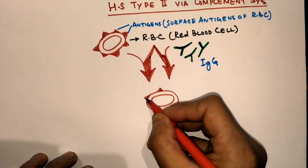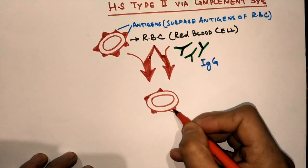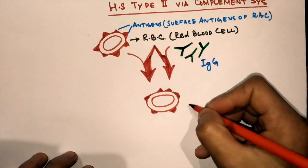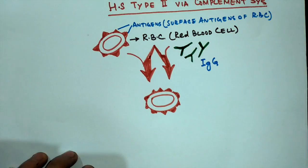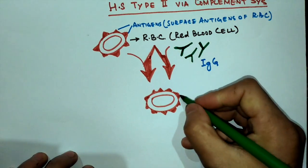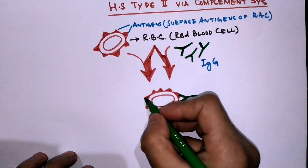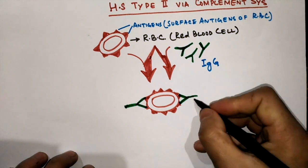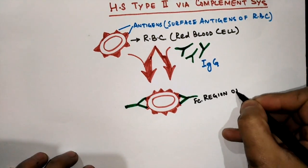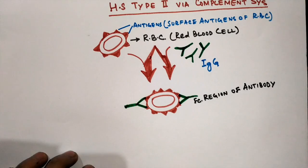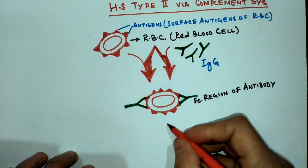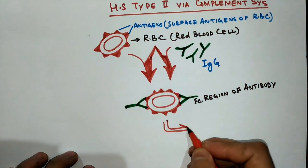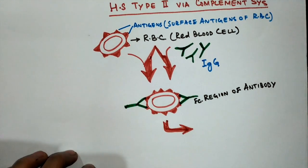In the next step, the IgG antibodies bind to the surface antigens in the manner shown. The Fc region is left behind, and that aids in activating the complement system. In the following step, the complement system, or MAC, is activated.